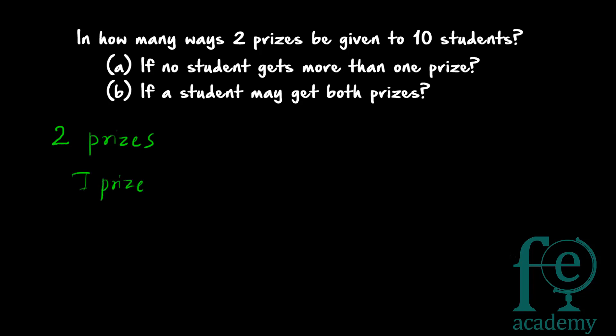For the first case, no student gets more than one prize. The first prize can be given in ten ways — any of the ten students can receive it. Now for the second prize, since the first prize has already been given to one student, that same student should not get the second prize.